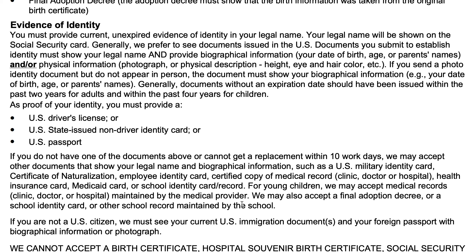For identity evidence, you have to have unexpired evidence to verify your legal name, which is what's shown on your Social Security card. Usually documents without an expiration date should have been issued within the past two years for adults or within the past four years for children. Examples of proof of identity would be a U.S. driver's license, a U.S. state-issued non-driver identity card, or a U.S. passport. If you don't have one of those documents, the Social Security Administration may accept other documents that show your name and biographical information.